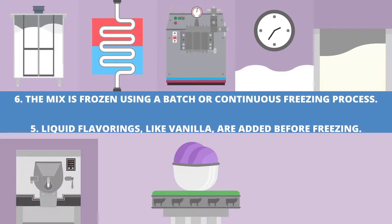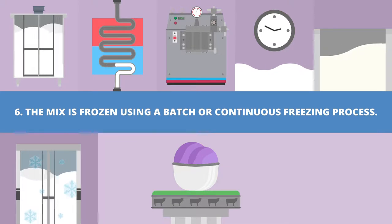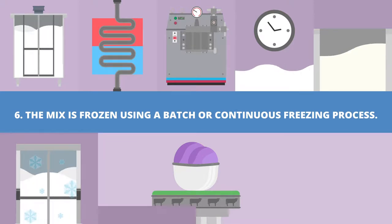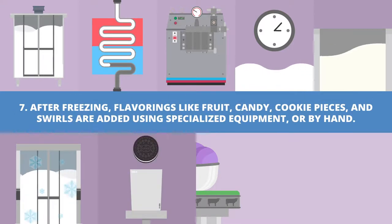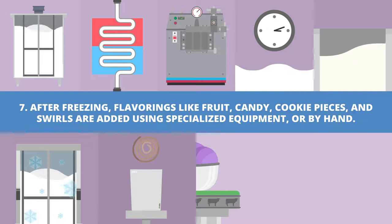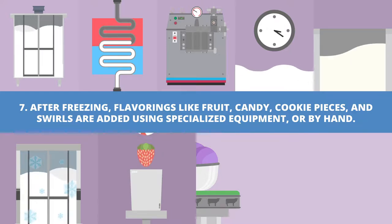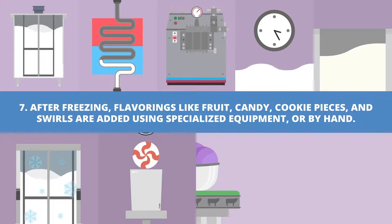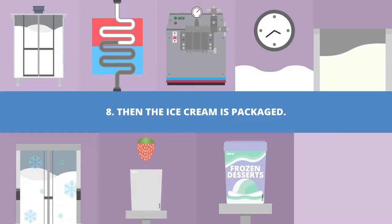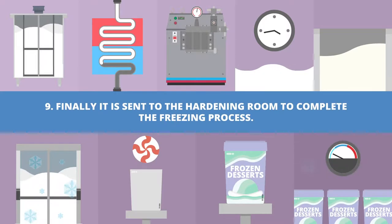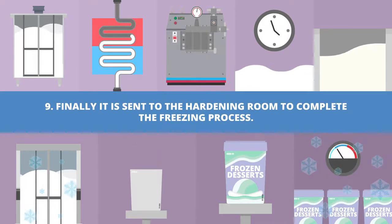The mix is frozen using a batch or continuous freezing process. After freezing, flavorings like fruit, candy, cookie pieces, and swirls are added using specialized equipment, or by hand. Then the ice cream is packaged. Finally, it is sent to the hardening room to complete the freezing process.